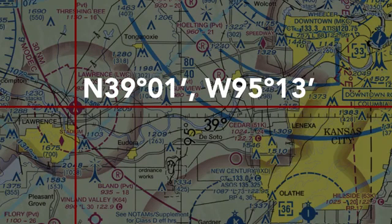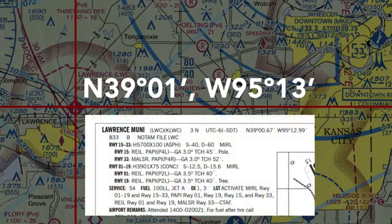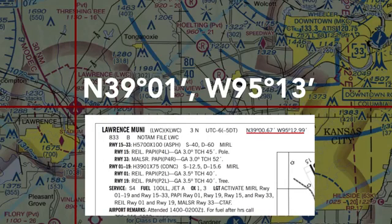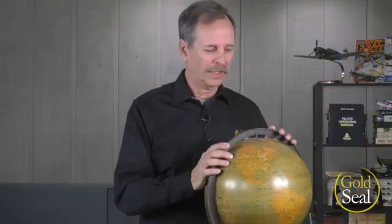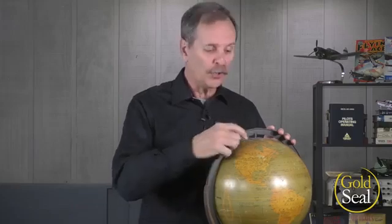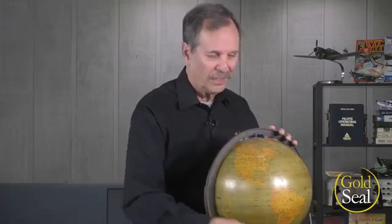We can confirm this by looking at the AFD info in the chart supplement publication — they have further divided the minutes into tenths of minutes, but it's basically the same thing. Quick review: lines of longitude connect the poles; lines of latitude encircle the globe parallel to the equator. We can define any specific point on Earth where these lines cross.